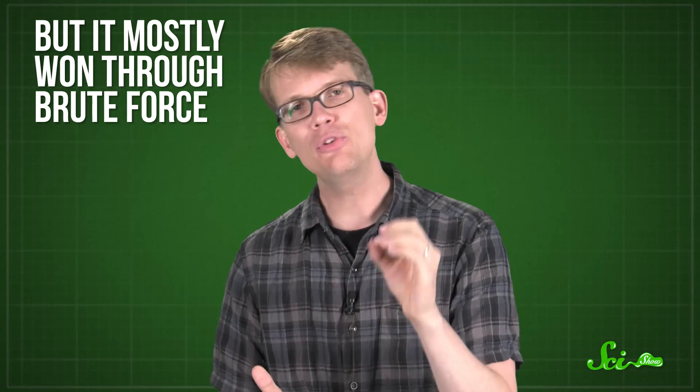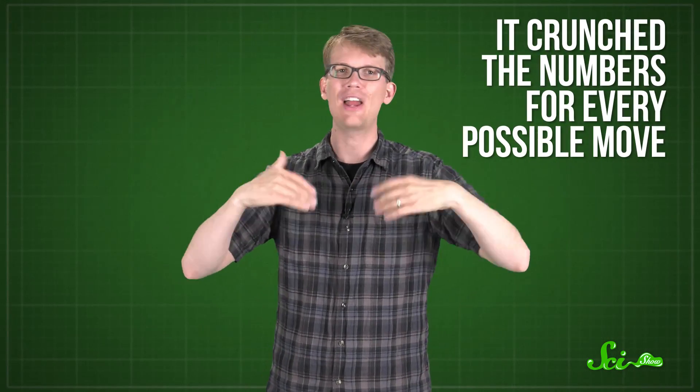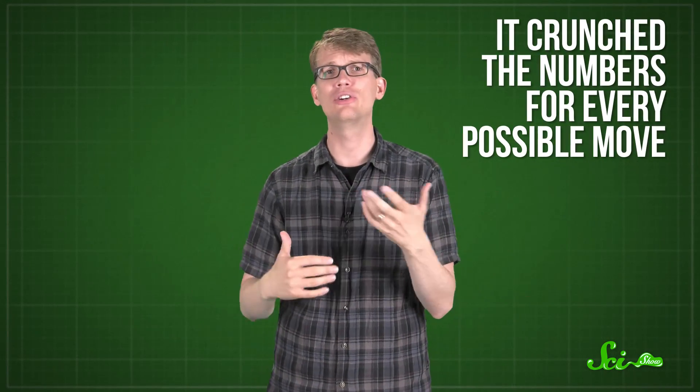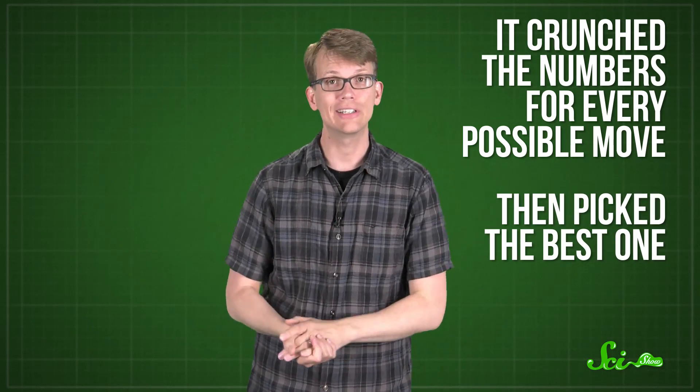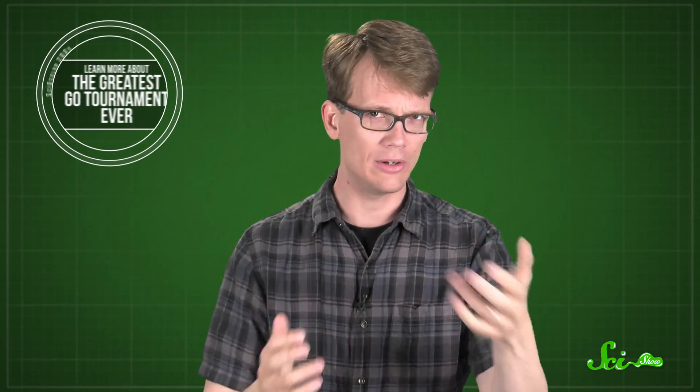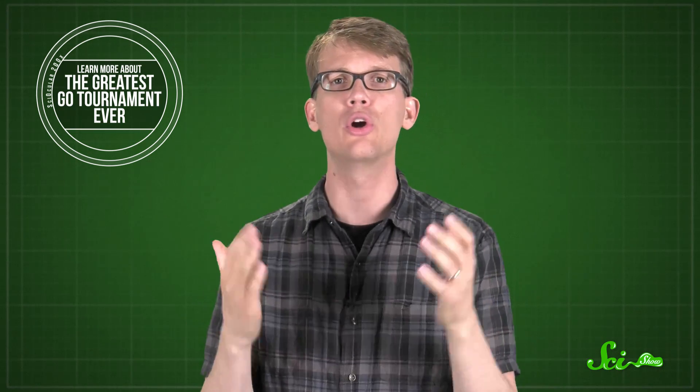Deep Blue was an incredible feat of computer programming. When it defeated Garry Kasparov, it was the most complex AI in the world, but it mostly won through brute force. It crunched the numbers for every possible move it or its opponent could make, then it picked the one most likely to lead to victory. If it didn't win, its programmers upgraded it so it could crunch even more numbers. That approach was not going to work with the game of Go. We talked about Go here on SciShow when Google's AlphaGo program defeated world Go champion Lee Sedol in March of 2016.